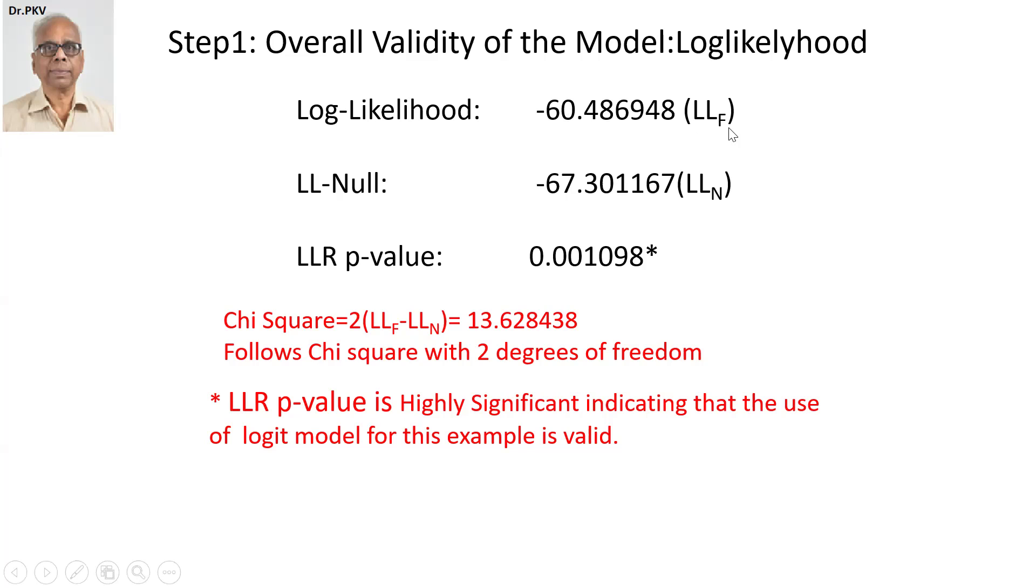Log likelihood null model is minus 67.301167, which is LLN. And here appears the p-value for the log likelihood function, which is 0.001098.